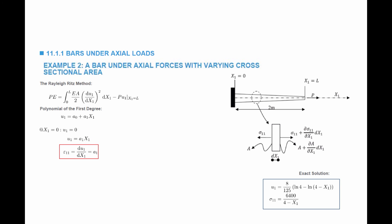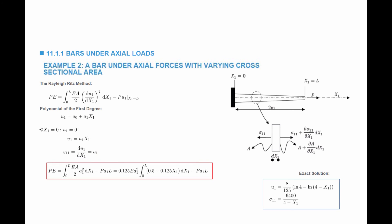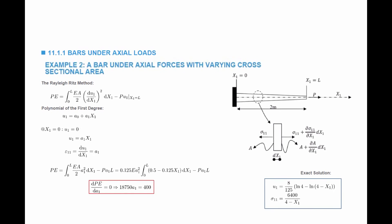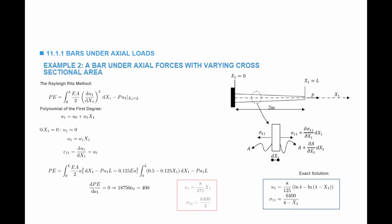The associated strain is du1/dx1 which equals A1. Substituting into the potential energy gives the integral of (EA/2)·A1² dx1 from 0 to L, minus the force multiplied by the displacement at x1 equals L, which is A1·L. After evaluating the integration and taking the first derivative of the potential energy with respect to A1 and equating it to 0, we get the equation 18750·A1 equals 400. So A1 is found, giving the horizontal displacement as (8/375)·x1 and sigma11 equal to 6400 divided by 3.